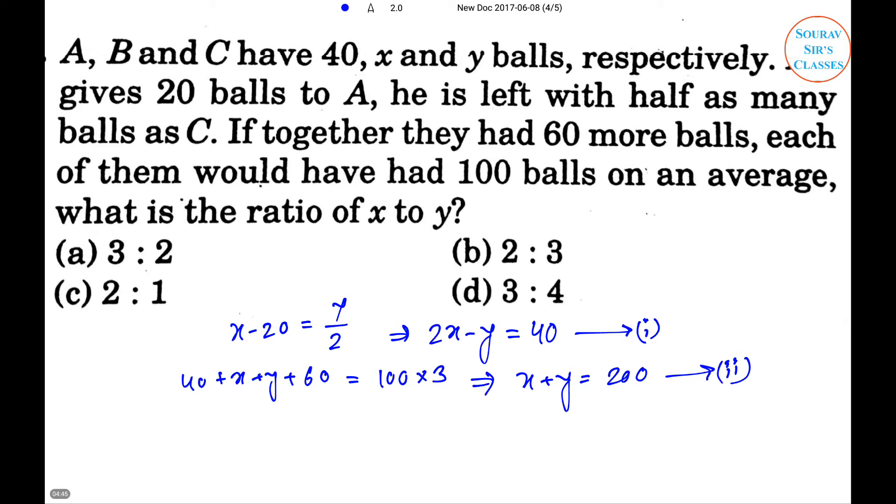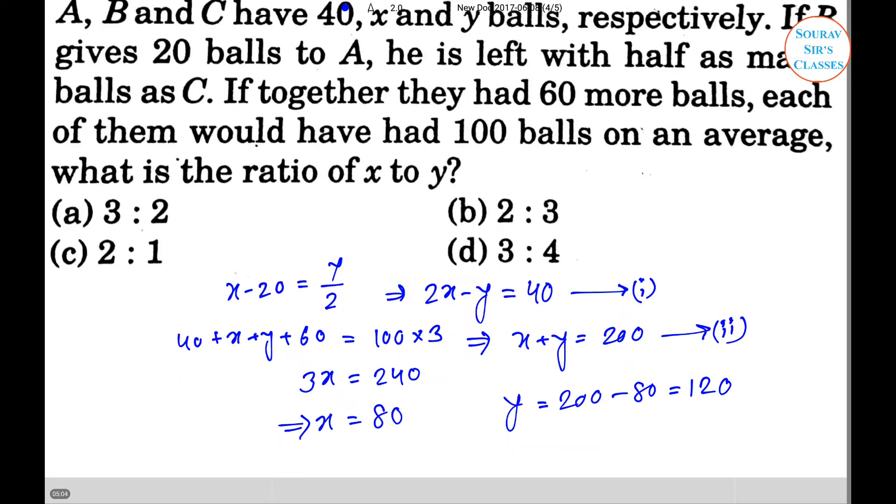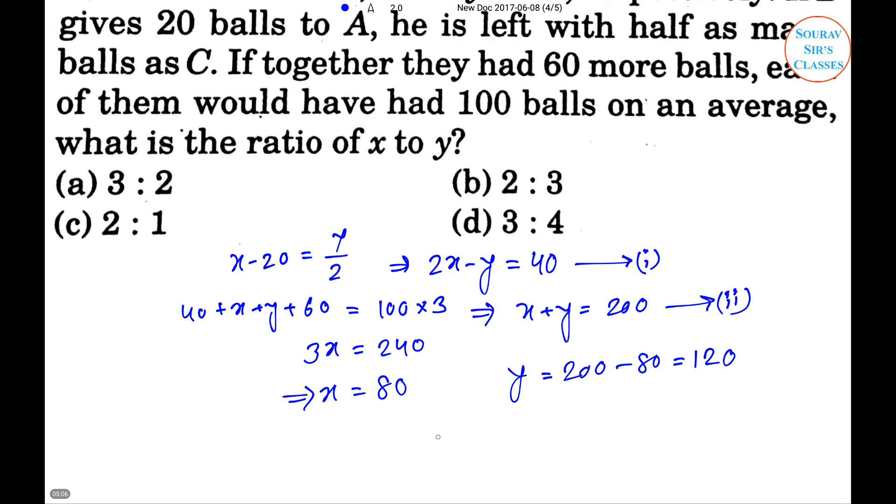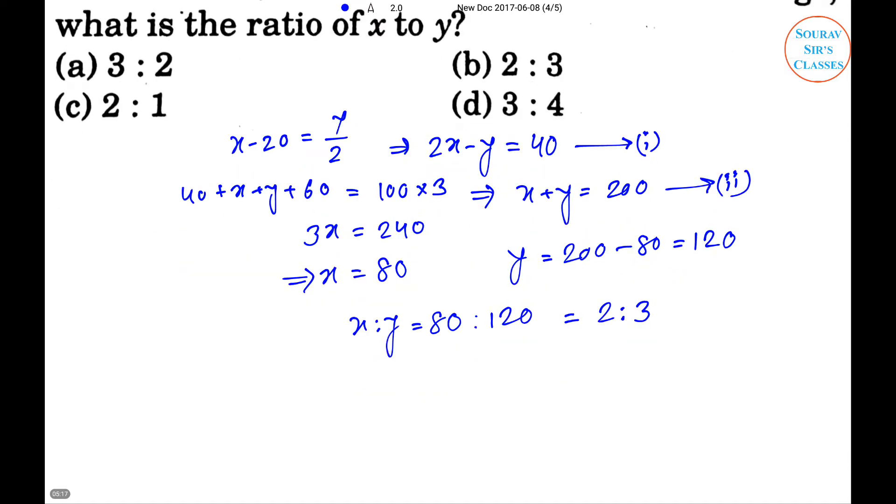Now on adding equations one and two, we get 3x equals 240, that means x equals 80. And putting the value of x in equation two, we get y equals 200 minus 80, which equals 120. So the required ratio equals x is to y, which equals 80:120, that means 2:3.